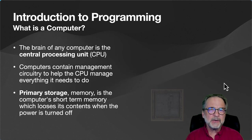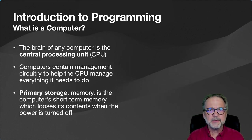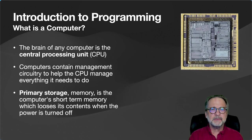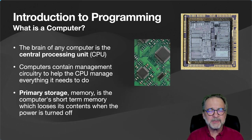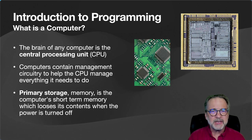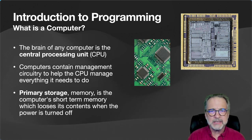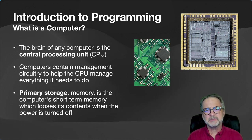The brain of any computer is the central processing unit, or CPU. Computers also contain management circuitry — sometimes called control or supporting chips — to help the CPU manage everything it needs to do. It needs to manage data coming in, output devices, and input devices.